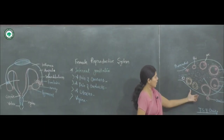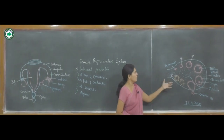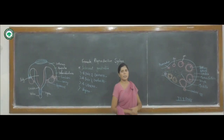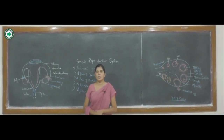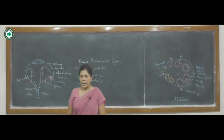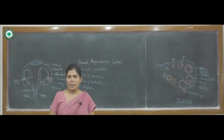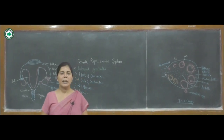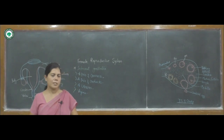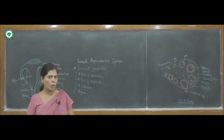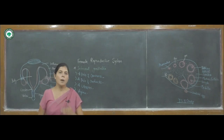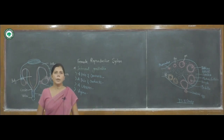The ovaries are developed in the pelvic region. Each ovary has an internal medulla as well as a cortex region. The production of gametes — production of ovum — is carried out in the ovary.